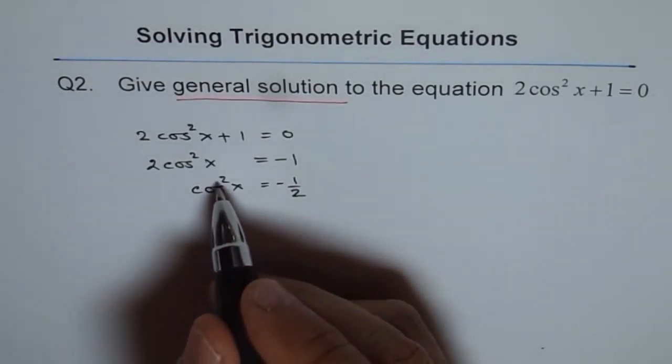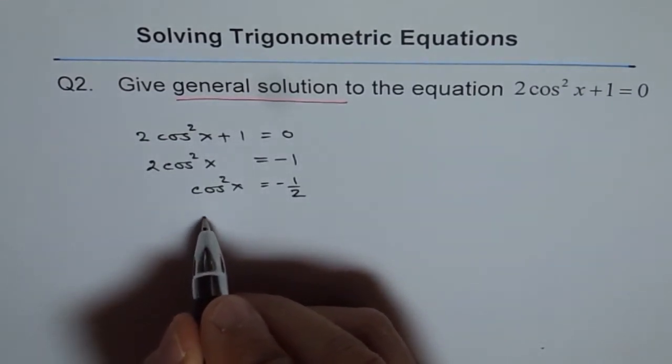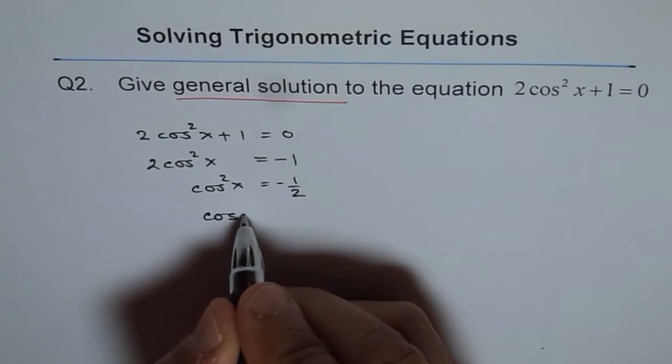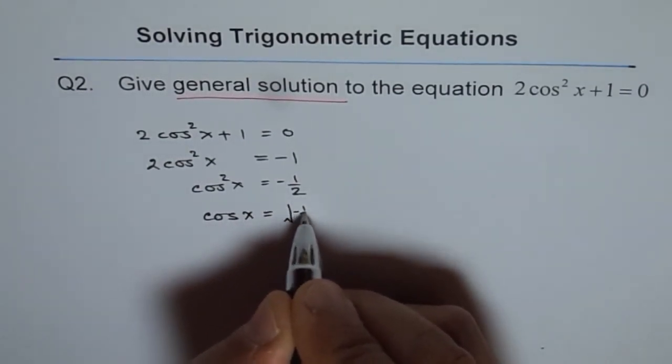Cos square x equals to minus 1 over 2 and then we kind of square root it. And if we square root it, we get cos x is equals to square root of minus half.